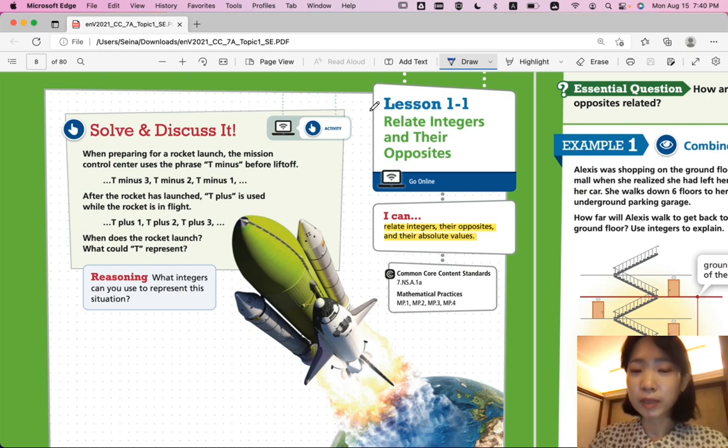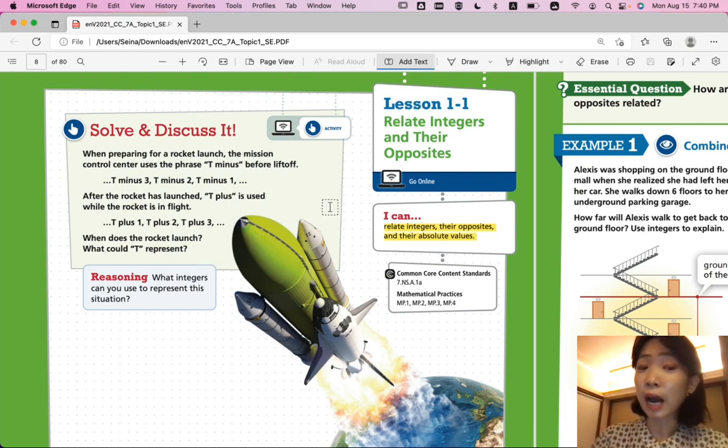What could T represent? T could represent multiple things. But in this sense, you can say it represents time or it represents takeoff. It represents to go. Yeah, there could be multiple answers.